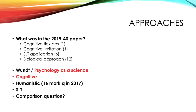Next we've got the humanistic approach. This did come up as a 16-mark question in 2017 but wasn't seen last year. Within this you've got the idea of free will, self-actualisation, and Maslow's hierarchy of needs. You've got the idea of needing congruency between the ideal self and the actual self, and finally the development of client-centred therapy.